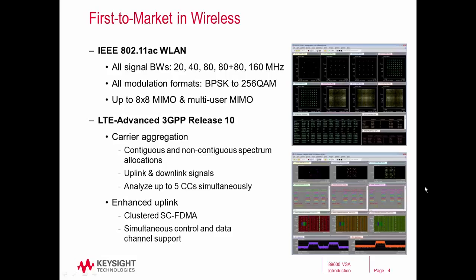In the commercial wireless industry in particular, the standards are continuing to evolve very quickly. Here we're showing some of the key features from two of the latest: 802.11ac and LTE Advanced. The VSA software has comprehensive coverage for both. For 802.11ac, we cover all of the bandwidth options, all of the modulation formats, and up to 8x8 MIMO and multi-user MIMO. For LTE Advanced, we cover the latest in carrier aggregation, contiguous and non-contiguous spectrum allocations, both uplink and downlink, and we can analyze up to five component carriers simultaneously. We also have enhanced uplink support, including clustered SC-FDMA and simultaneous PUSCH and PUCCH.